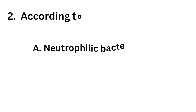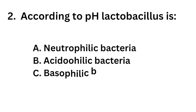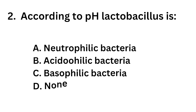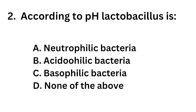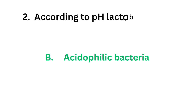Question number 2: According to pH, Lactobacillus is — Option A: Neutrophilic bacteria. Option B: Acidophilic bacteria. Option C: Basophilic bacteria. Option D: None of the above. The correct answer is Option B, Acidophilic bacteria.